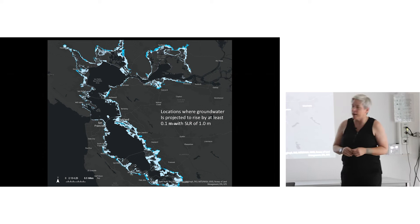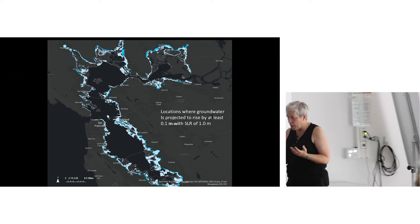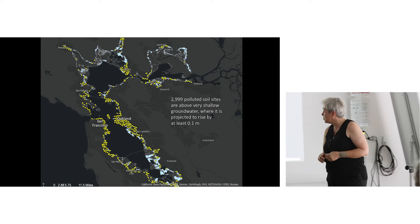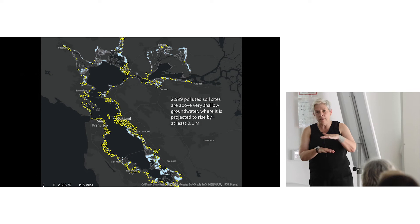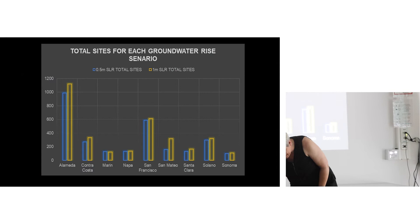These white and blue zones show where the groundwater is projected to rise by at least 10 centimeters by 2100, with one meter of sea level rise. We have just completed the research that shows there are almost 3000 polluted soil sites in the zone close to the water table where the water table is rising. That's a lot. 3000 is more than I expected. I expected 500. So it's a much bigger problem than we expected.